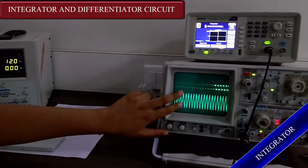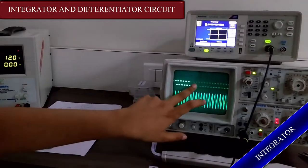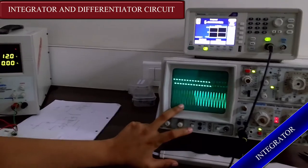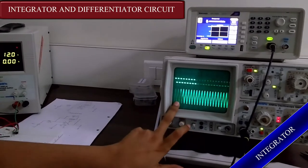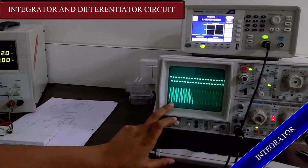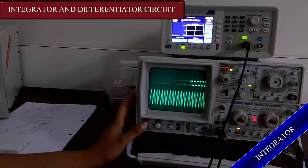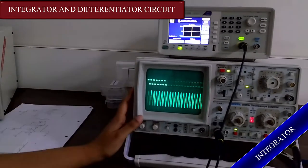Now as you can see that I have given a square input but I have got a triangular output. This is what happens in integrator at high frequency. Now this was at one kilohertz.